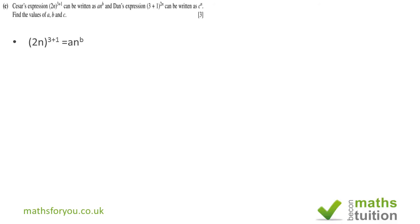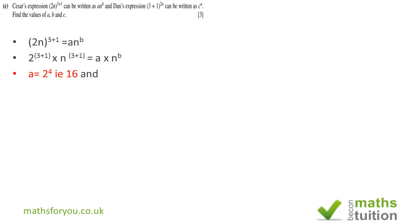For Cesar: (2n)^(3+1) equals a times n to the power b. Breaking this down, that's 2^4 times n^4, which equals a×n^b. To verify: suppose n=3, then (2×3)²=6²=36, and also 2²×3²=4×9=36 — they match. So a=2 to the power 4=16 and b=4.